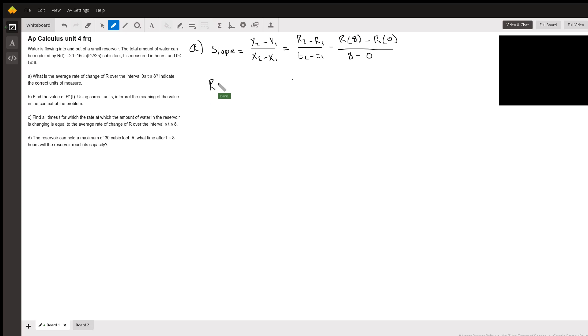So now let's figure out R of 8 and R of 0. For R of 8, this is 20 minus 15 times sine of T squared. So 8 squared is 64 divided by 25. And then I went ahead and put this into my calculator, and this comes out to be 11.7597. And our units on this is cubic feet.